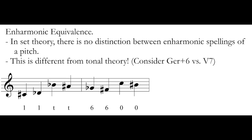Set theory also subscribes to the idea of enharmonic equivalence. That means that in set theory, there is no distinction between enharmonic spellings of a pitch. If we see C sharp and D flat, both of those pitches are going to be labeled as 1. We're not going to treat them any differently because of how they're spelled, because they sound the same. All our enharmonically equivalent notes are going to be given the same pitch class.